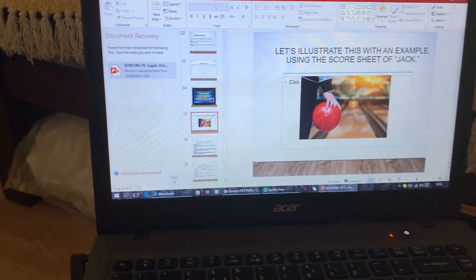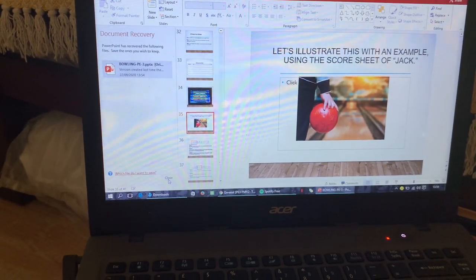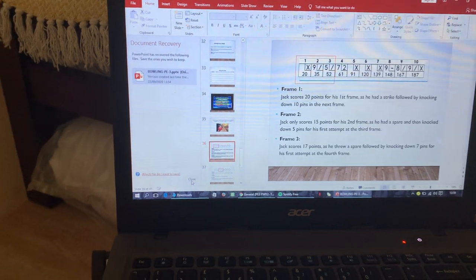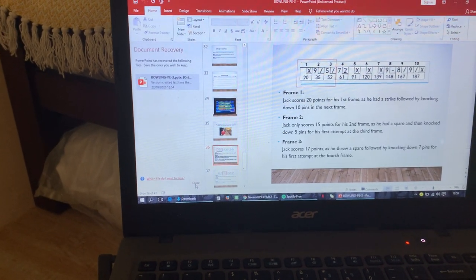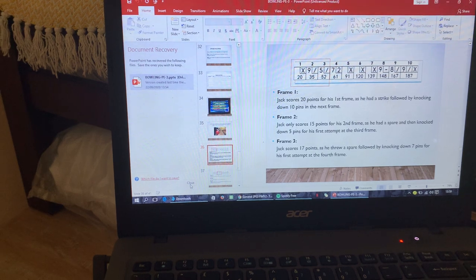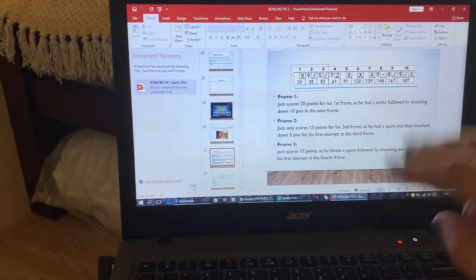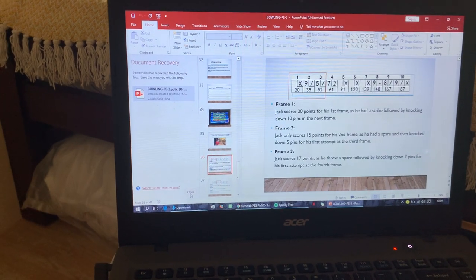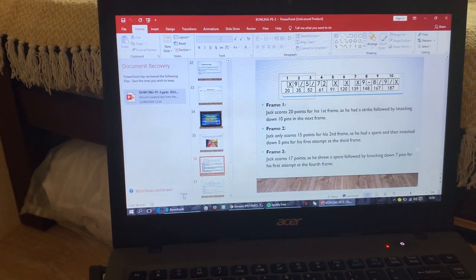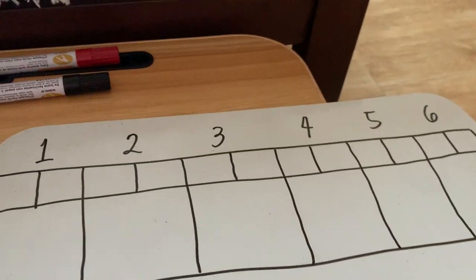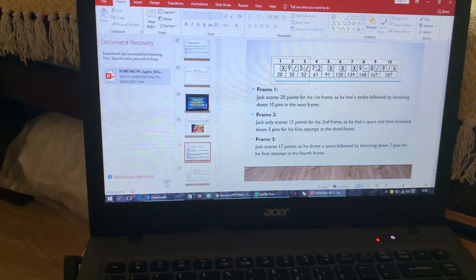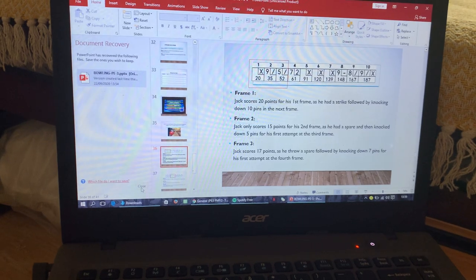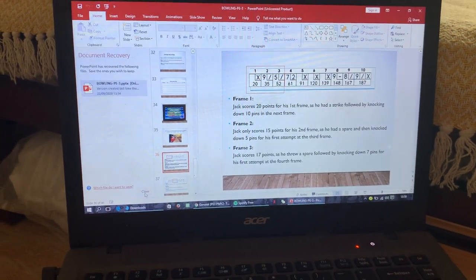We'll start with the illustration of the score sheet of Jack. So this one is an example of an illustration because this will be your final requirement for the prelim. I will give you the same set of situations and then you will be the one to answer. So using our whiteboard, I will only answer six frames. So I will leave this one as your seat work and then I will give another assignment.